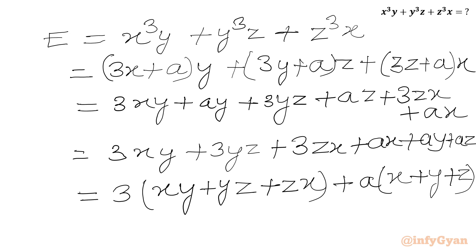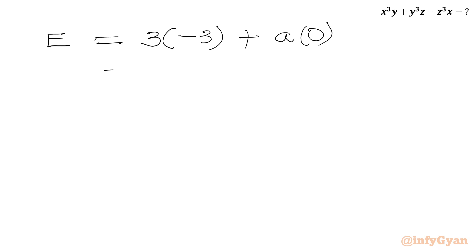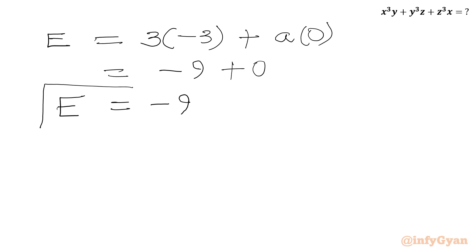Now we know the values. x plus y plus z was the first given equation, equal to 0. xy plus yz plus zx was the second given equation, equal to minus 3. So e becomes 3 times minus 3 plus a times 0, which gives minus 9 plus 0. Our final answer is e equals negative 9.